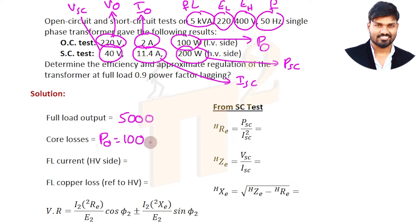Full load current on HV side: total power is 5000 and HV side is 400 volts, so 5000 by 400 equals 12.5 ampere. This is the HV side full load current. Here it is only drawing 11.4 ampere, so P_SC is not full load copper losses because current is not full load current.